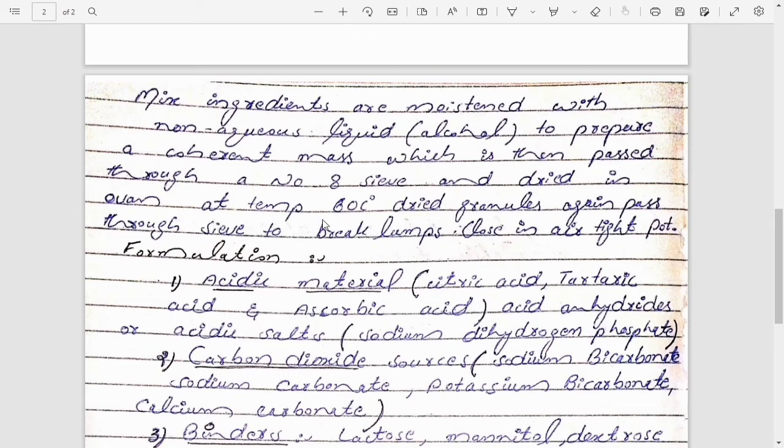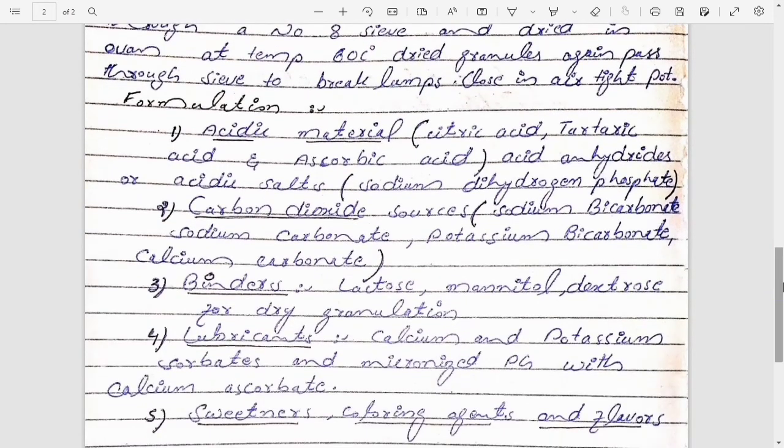in oven at temperature 60 degrees centigrade. After drying, this granule will be again forced through a sieve to break the lumps. Sometimes when we dry the granules in oven, some granules come closer to each other and form lumps. So to break those lumps we have to pass again these granules from the sieve, and after passing again from the sieve we will close these granules in airtight container.